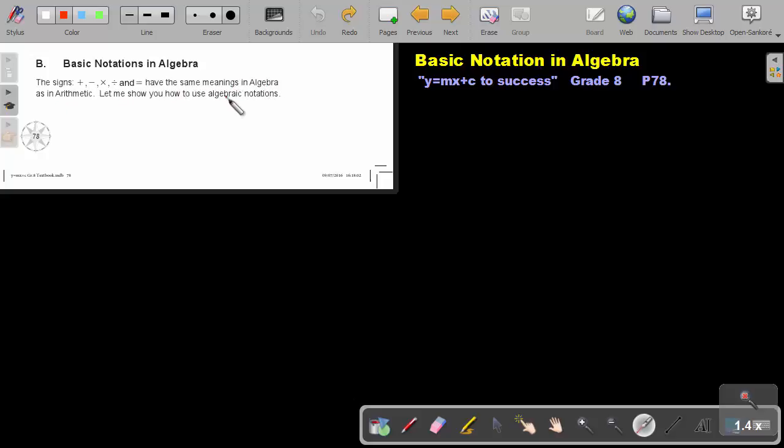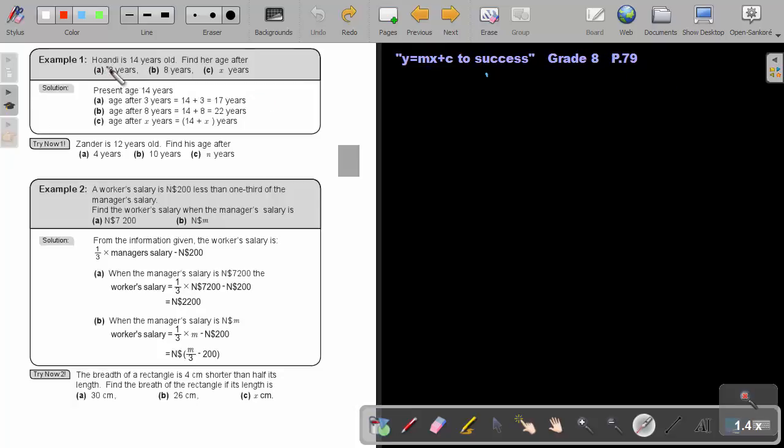Let me show you how to use algebraic notation. Let's look at an example. Wendy is 14 years old. Find her age after 3 years, 8 years, X years. So her age at present is 14. After 3 years, it will be 14 plus 3, which is 17. After 8 years, it will be 14 plus 8, which is 22 years. And after X years, it will also be 14 plus, but now instead of adding 8 or 3, I just add X.